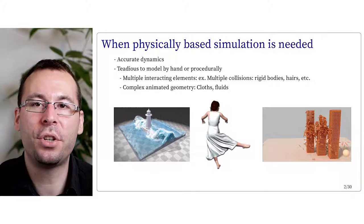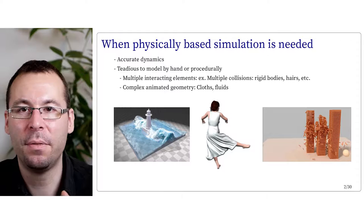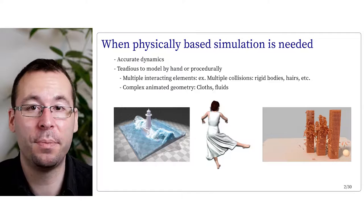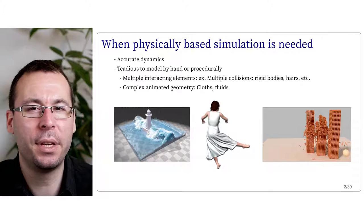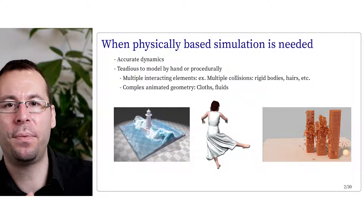Second is when the object or animation would be too complex or tedious to model by hand or using procedural animation. This is the case when multiple elements are interacting or colliding — for instance a pile of rigid bodies, or the hairs of a character — or when the geometry is very complex and needs to be correctly animated, like the wrinkles of a garment or the waves of a fluid.